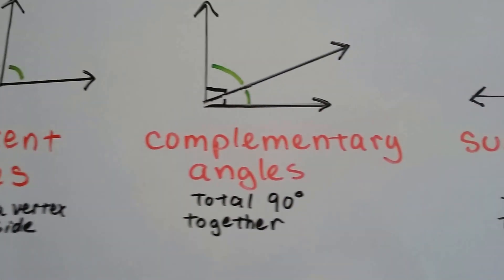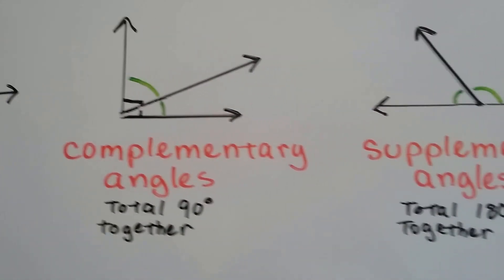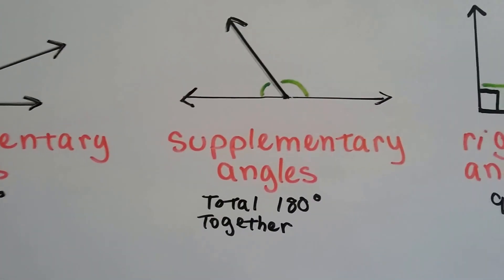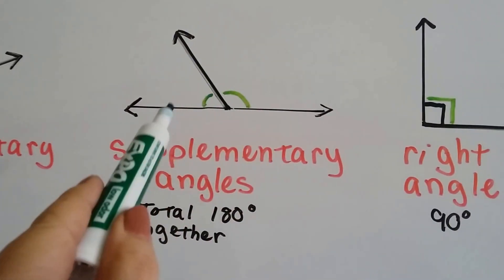Complementary angles are two angles when put together they total 90 degrees. Supplementary angles when put together total 180 degrees, a half circle.